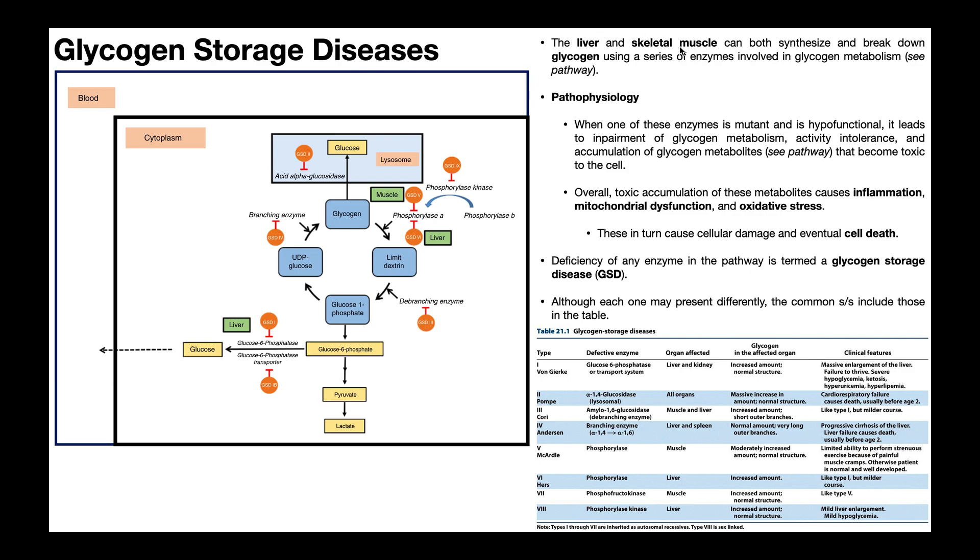The liver and skeletal muscle can both synthesize and break down glycogen using a series of enzymes involved in glycogen metabolism. You can look at this pathway over here. We're not going to discuss it in a lot of detail because we've done that in previous videos. Remember, when the liver synthesizes glycogen, it breaks it down mainly to supply all the other tissues of the body with glucose. So the liver is much more altruistic or selfless.